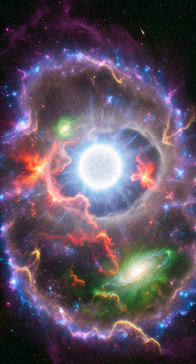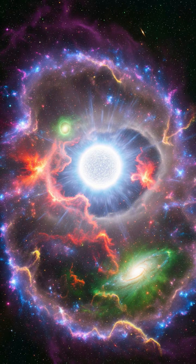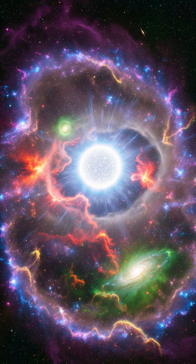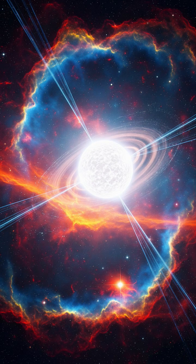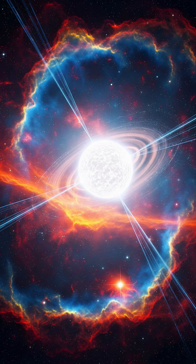When a massive star dies in a spectacular explosion called a supernova, what's left behind is not just ashes, but an incredibly dense core, a neutron star. Imagine this: a single teaspoon of its material would weigh about a billion tons on Earth.